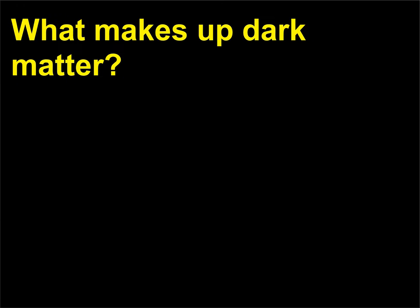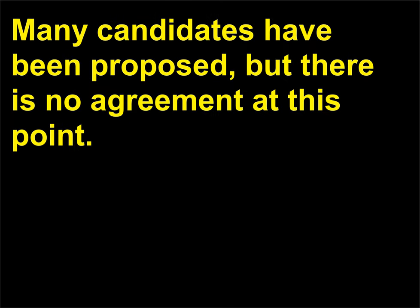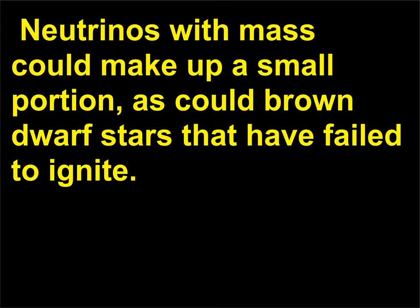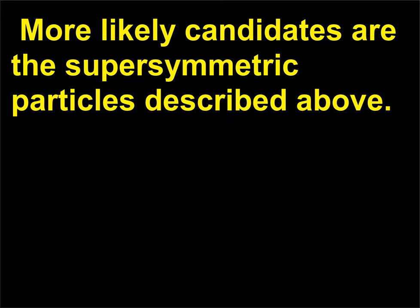What makes up dark matter? Many candidates have been proposed, but there is no agreement at this point. Neutrinos with mass could make up a small portion, as could brown dwarf stars that have failed to ignite. More likely candidates are the supersymmetric particles described above.